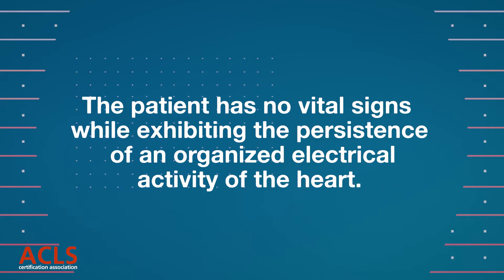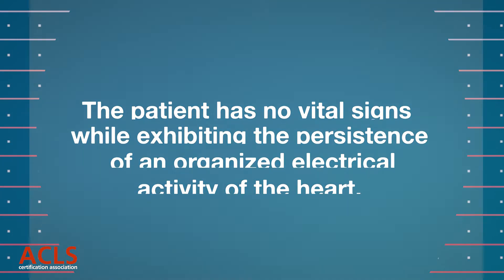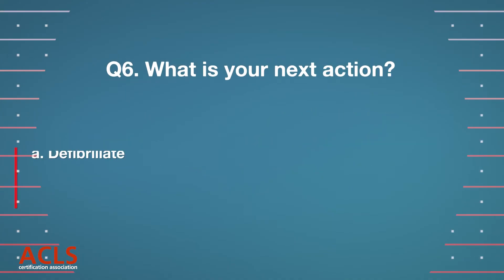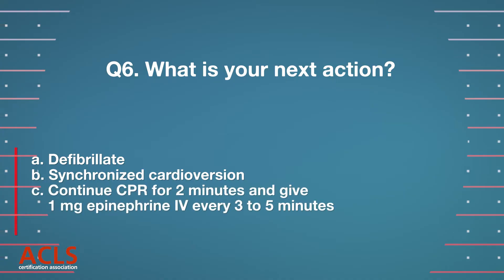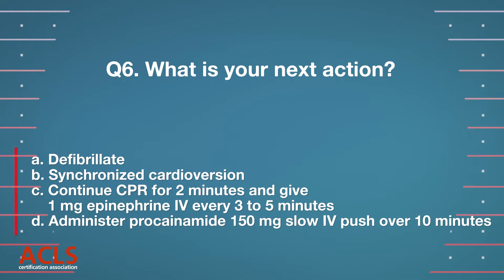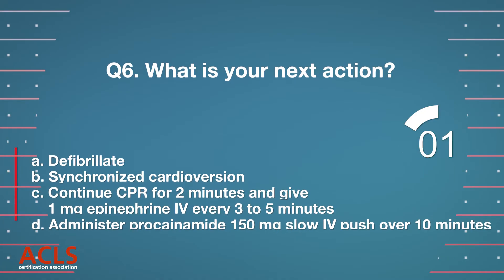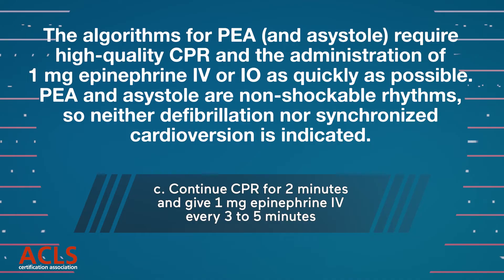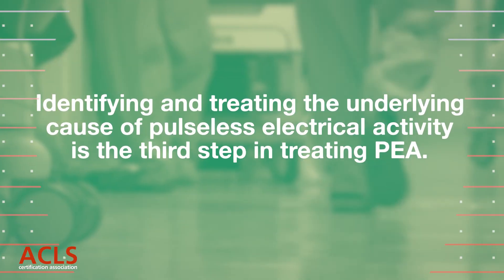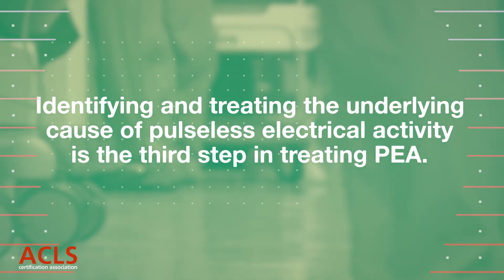The patient has no vital signs while exhibiting the persistence of an organized electrical activity of the heart. Question 6: What is your next action? A. Defibrillate. B. Synchronized cardioversion. C. Continue CPR for 2 minutes and give 1 mg epinephrine IV every 3 to 5 minutes. D. Administer procainamide 150 mg slow IV push for 10 minutes. Correct answer: C. Searching and treating the underlying cause of pulseless electrical activity is the treatment for PEA.